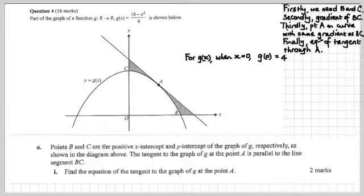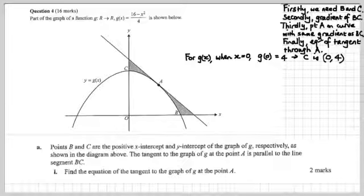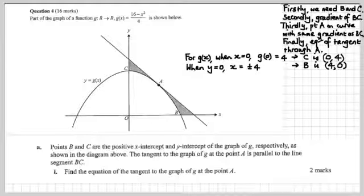For g(x), when x is 0, I'm getting the y-intercept: g(0) will be 4, so that's the point C at (0, 4). Then when y is 0, we get the x-intercept. That's going to be plus or minus 4, but we want the plus 4 value, so that's B at (4, 0).